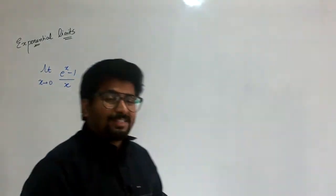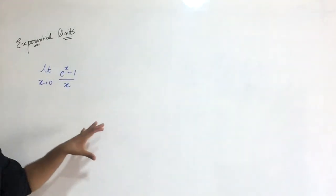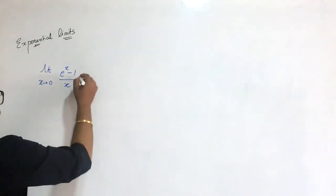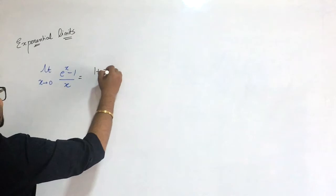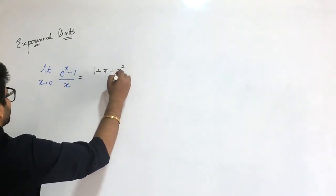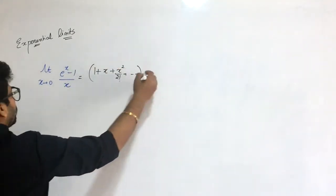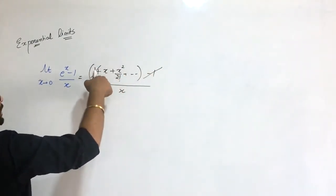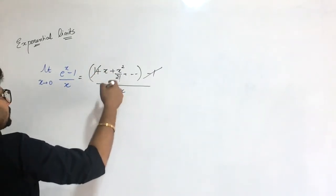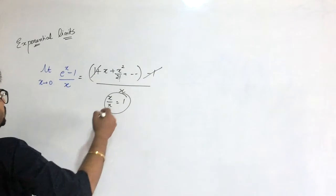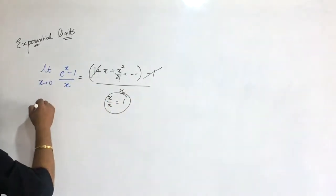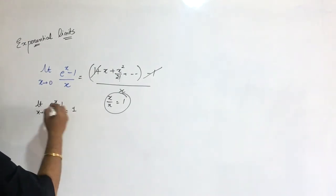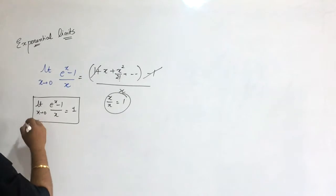To solve this, the best approach is using expansion and series. The expansion of e raised to x is 1 plus x plus x square upon 2 factorial and so on. Minus 1 upon x. When x approaches 0, the effective degree is the smallest term which is x here. So x by x gives you 1. This is an important result to memorize: limit x approaches 0 of e to the power x minus 1 upon x is always 1.